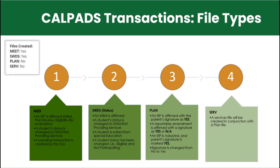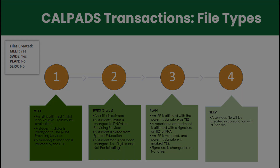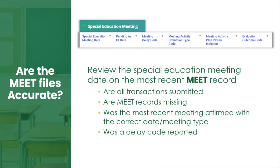SACE transactions include four possible file types. SACE activity determines which file types are created and included in the reportable transaction. When viewing the transaction in SACE, the file types included are identified in the Files Created box. Meet files determine monitoring categories and compliance.